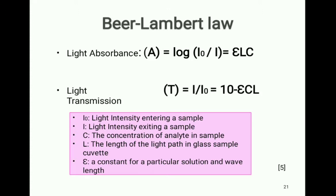Light transmission, designated as T, is equal to 10 to the power of negative ECL. Here, I₀ is the light intensity entering the sample, I is the light intensity exiting the sample, C is the concentration of the analyte in the sample, L is the length of the light path in the glass sample cuvette, and E — that is epsilon — is a constant for a particular solution and wavelength.